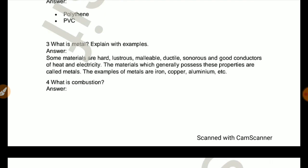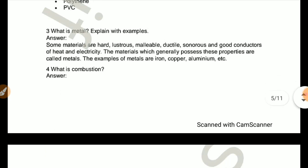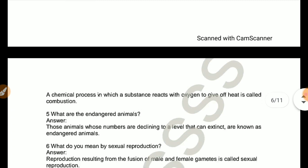What is metal? Some materials are hard, lustrous, malleable, ductile, sonorous and good conductor of heat and electricity. The materials which generally possess these properties are called metals. Examples are iron, copper, aluminum. What is combustion? A chemical process in which substance reacts with oxygen to give off heat is called combustion.